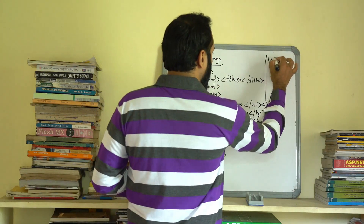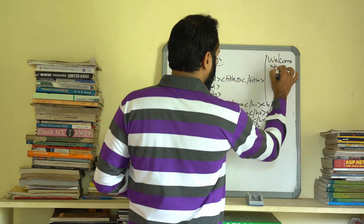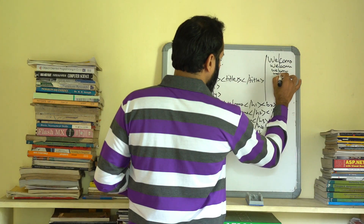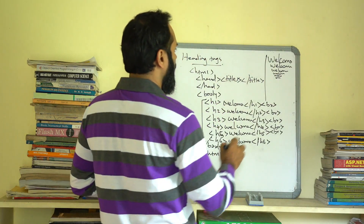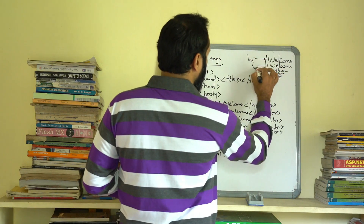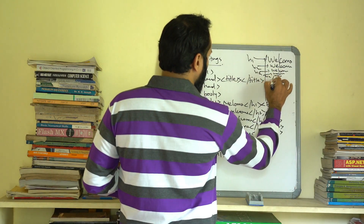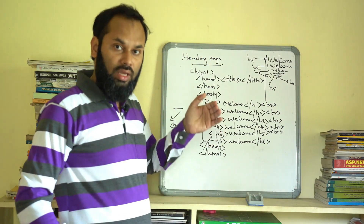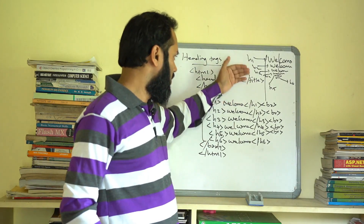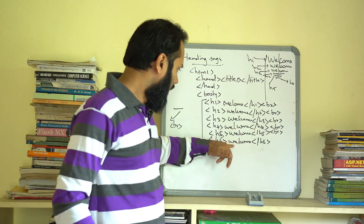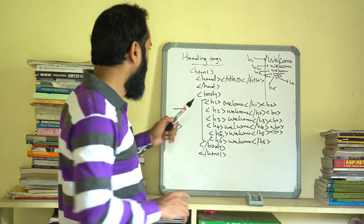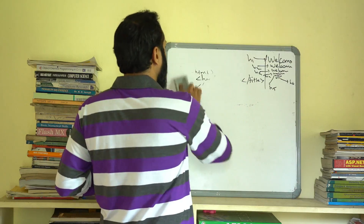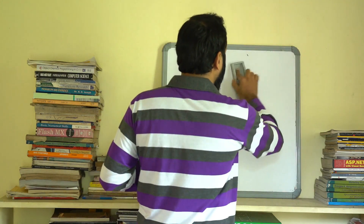Let's look at this output. You can see the difference in sizes. This is H1, this is H2, this is H3, H4, H5, and this is H6. H1 is the largest and H6 is the smallest — that is how heading tags work. We will check any doubts in the comment box.